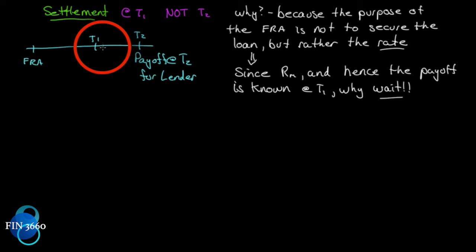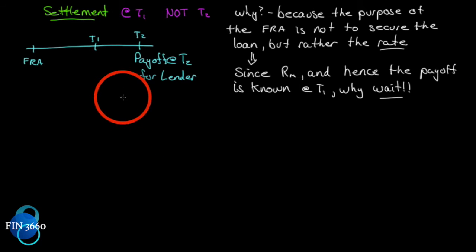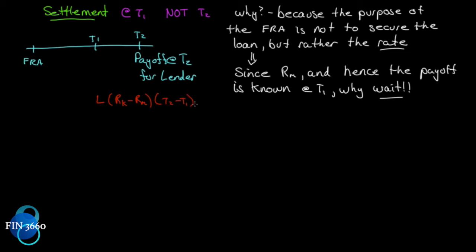What's the payoff at t2 for the lender? The lender lends an amount L and makes the difference between the contract rate and the market rate — we're only concerned about the spread, because the market rate is what each party realizes by doing their own thing. We're just locking in the spread for the t2 minus t1 period of time. At t1 we'll already know what rm is, so we can calculate the payoff at t2.